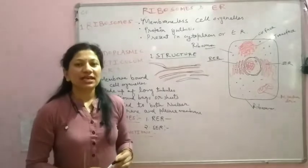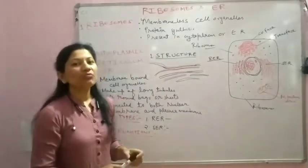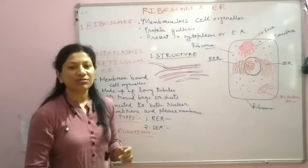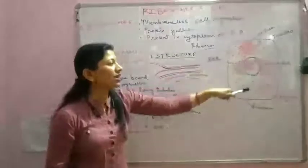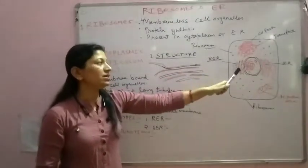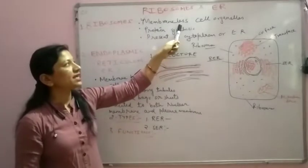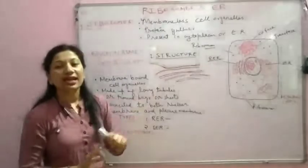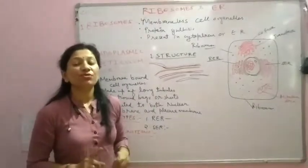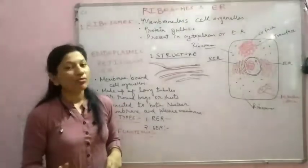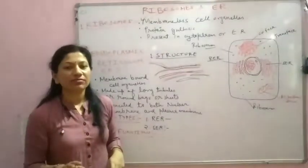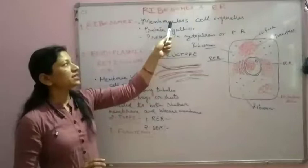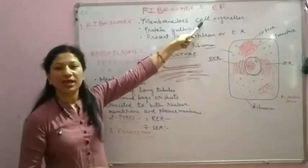In previous classes I told you that the plasma membrane is the outer covering of the cell. Similarly, every cell organelle has its own membrane. But in the case of ribosomes, they are membrane-less cell organelles — they don't contain any membrane. Ribosomes are the only cell organelles in the cell that have no membrane around them; all other cell organelles have their own membrane.